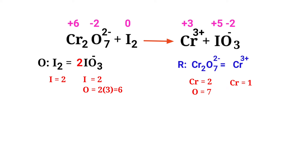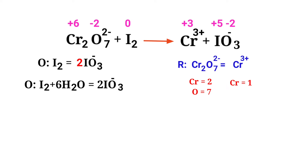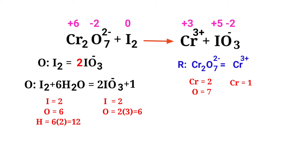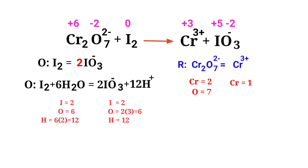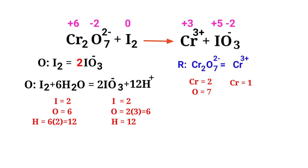Now we need to balance the oxygen atoms. To do this, you produce water molecules, and balance hydrogen using H+ ions. Now the number of atoms are balanced in the oxidation half reaction.